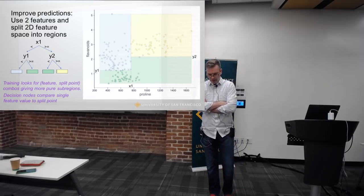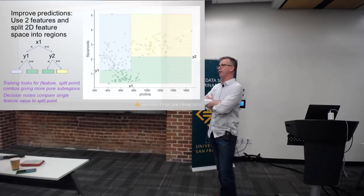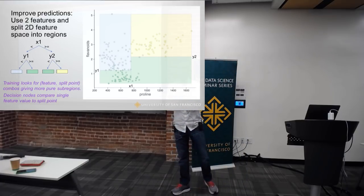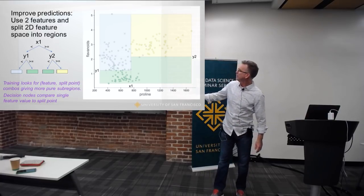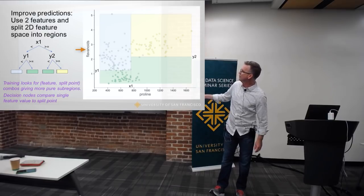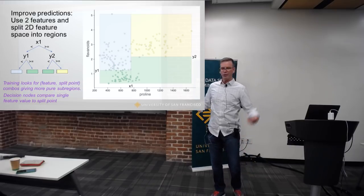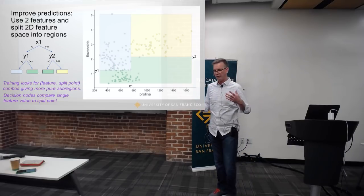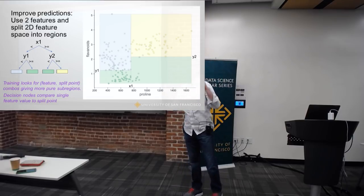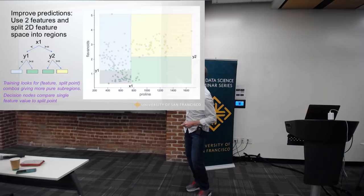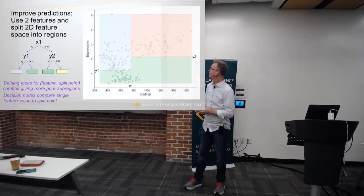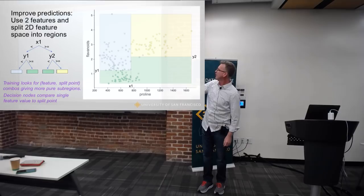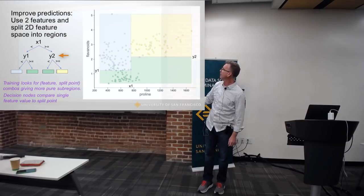If we now allow the tree to grow bigger, it has the opportunity to look for another combination of feature and feature value. In this case the model has decided that it's best to split in the other dimension — flavonoids. So now we're splitting in the other direction, which allows us to tessellate and partition this space. Imagine you're doing this by hand — you'd just draw squares. The only constraint is they have to be perpendicular lines. So I get a different feature being tested here and a different feature tested there, breaking it down into purer regions.